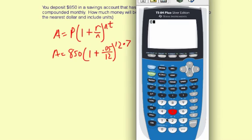We're going to do 850 times, open parentheses, 1 plus, open parentheses, 0.05 divided by 12, close parentheses. Those parentheses are for this fraction here. Then close the second set of parentheses, which is for 1 plus 0.05 over 12. For the power, put in parentheses 12 times 7, close parentheses. Now enter.